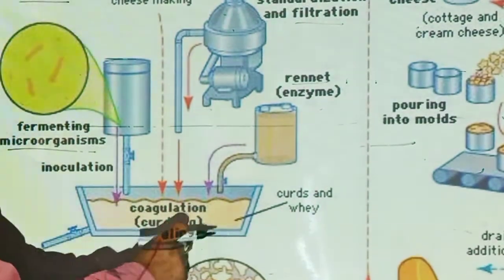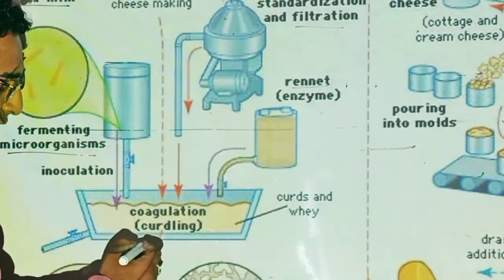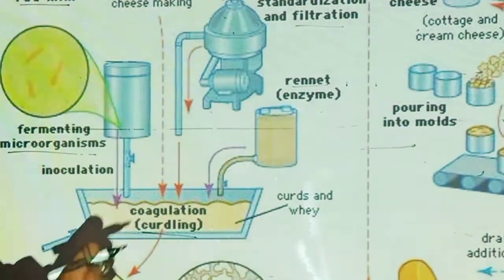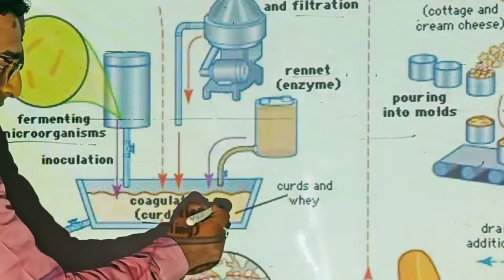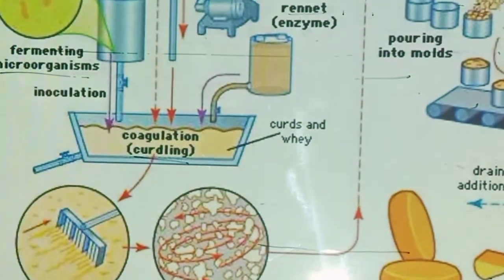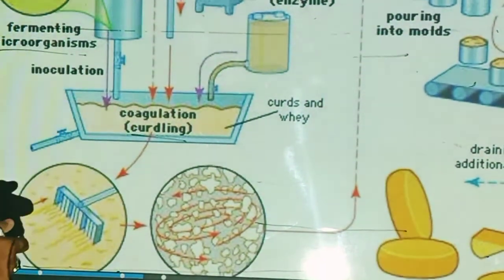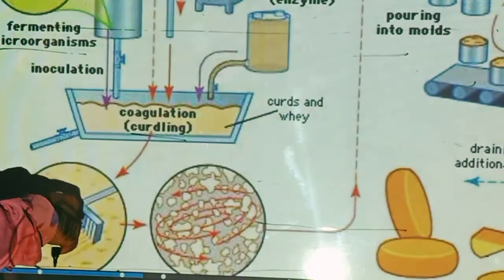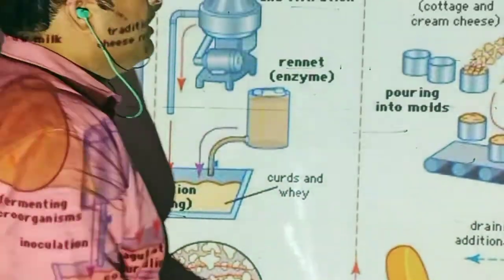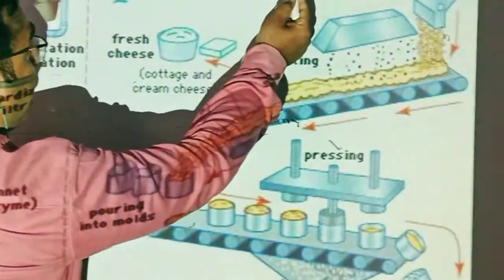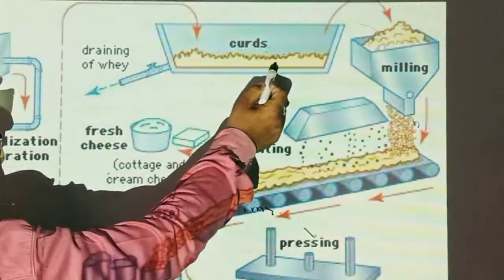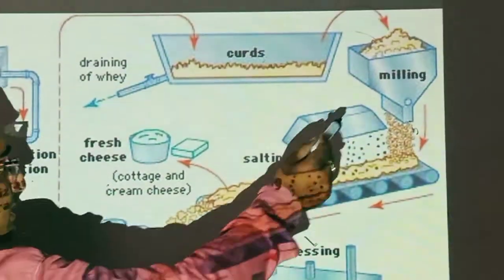The rennet enzyme leads to milk coagulation, producing curds. You can see the curds forming. The liquid part — the whey — is then drained off, leaving the solid curds.